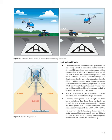Instructional points: the student should learn the correct procedures for fixed-wing aircraft at controlled and uncontrolled airports. This knowledge provides the student with an understanding of where to expect fixed-wing aircraft and how to avoid them in the traffic pattern. Teach the student how to search the airport facility guide to check for the fixed-wing traffic pattern. Instructors should also reference the helicopter flying handbook, which details fixed-wing traffic patterns and how helicopters can avoid traffic or operate in it when the tower has mixed traffic.